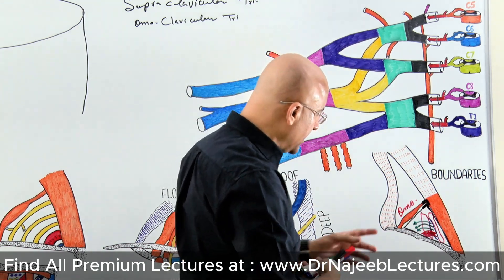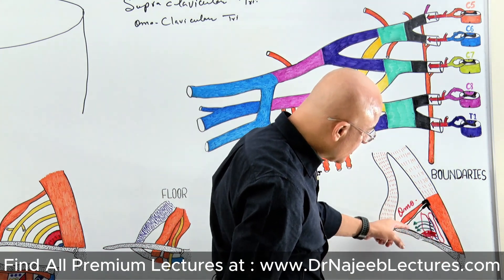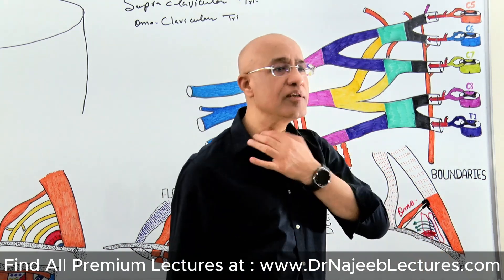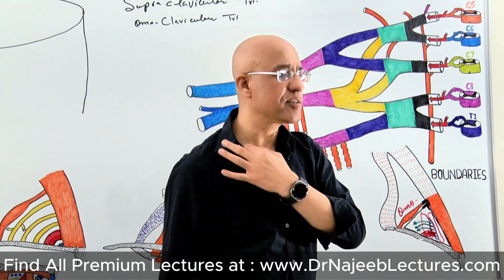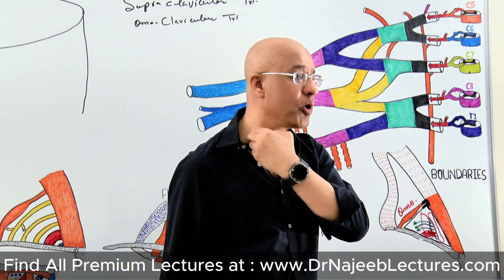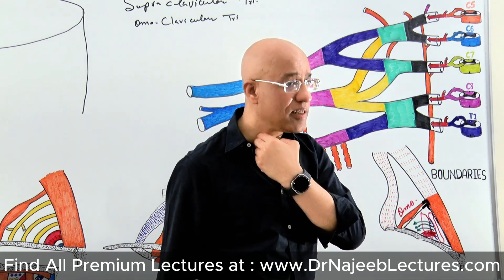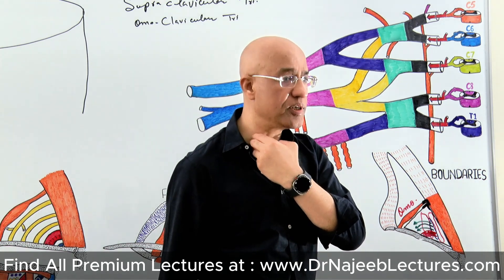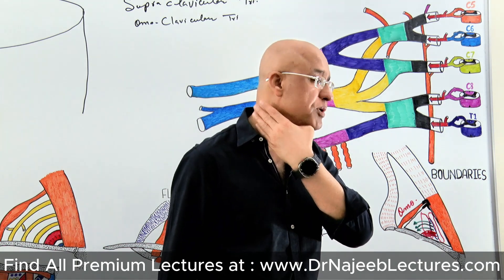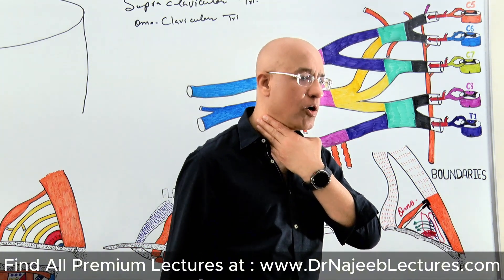Now you can understand where this apex and this subclavian triangle is placed. It is just above the clavicle, and on the medial side especially, it is just above the clavicle and just behind the lower part of the sternocleidomastoid. These two things are very obvious. And if you do the dissection — if you open up the roof — roof means you will remove the skin and some underlying tissue. I will explain what the roof of this triangle is.